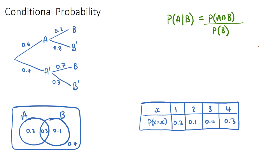These types of questions appear in a few different ways, and we're going to do three quick examples: a tree diagram, a Venn diagram, and a table of probabilities.